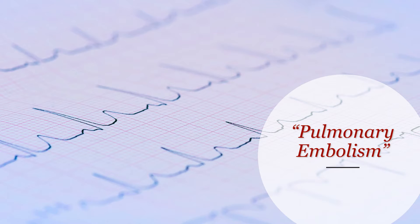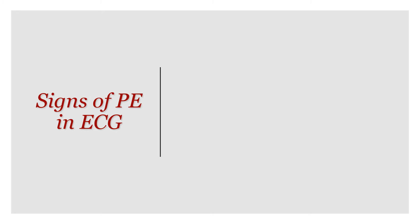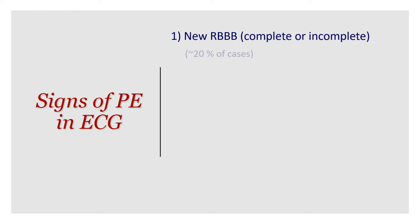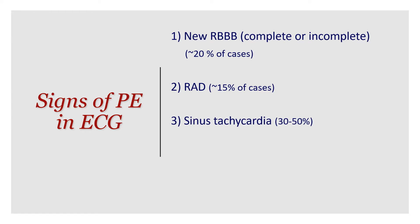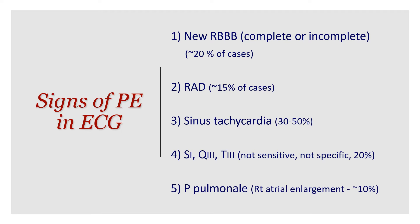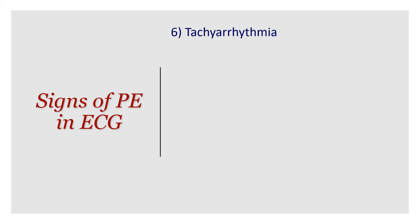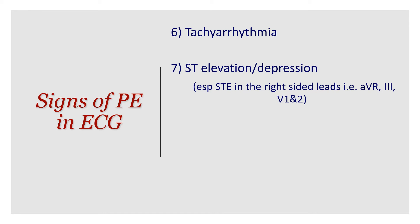The question is: does this match with pulmonary embolism? We talked about ECG signs of PE last week — let's reinforce this. New right bundle branch block, complete or incomplete, is seen in about 20% of PE cases. Right axis deviation in about 15%, sinus tachycardia in 30 to 50%, S1Q3T3 is not sensitive and not specific, seen in about 20% of cases. Peaked P waves indicating right atrial enlargement are seen in about 10% of cases. We also covered tachyarrhythmias and ST elevation and depression, particularly ST elevation in AVR, lead 3, V1, and V2.